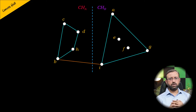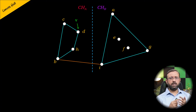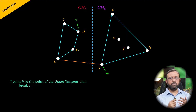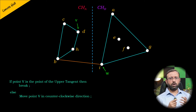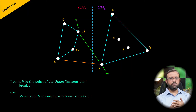Now we compute the upper tangent. We start with the rightmost point from the left convex hull — let us call this point V. Then we consider the leftmost point from the right convex hull — let us call this point W. We check if the point V of the line segment VW is the point of the upper tangent for the left convex hull. If so, V will stop; otherwise, we move point V counterclockwise. In this case, the point V of the line segment VW is not the point of the upper tangent because it's not the highest point in the left convex hull.